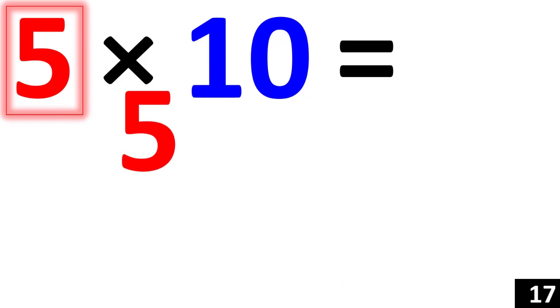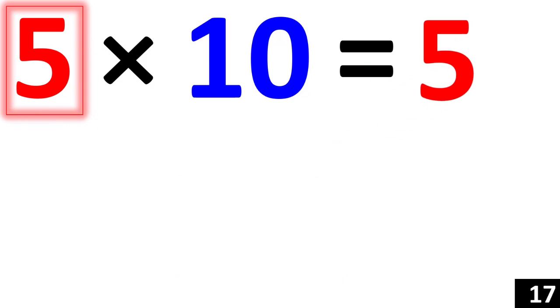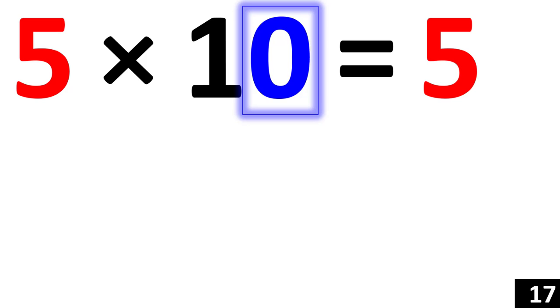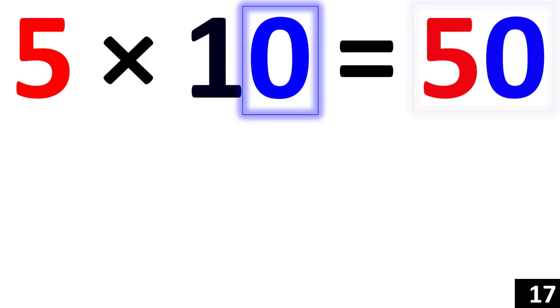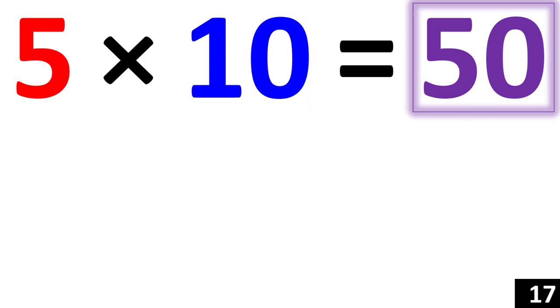For 5 times 10 we just use the rule of 10. 5 times 10 is a 5 with an added 0. That's 50.